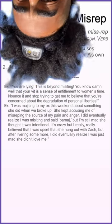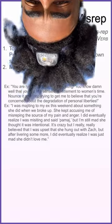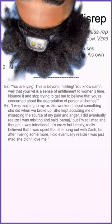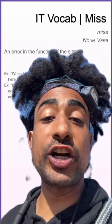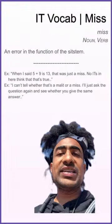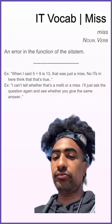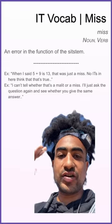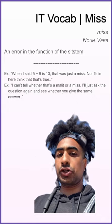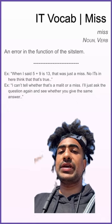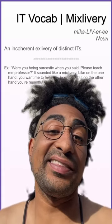I did eventually realize I was misiting and said pomage, but I'm still mad she thought it was intentional. I really believed I was upset that she hung out with Zach, but after livering more I realized I was just mad she didn't love me. Miss: an error in the function of the system. Example: when I said five plus nine is 13, that was just a miss. Mixed livery: an incoherent exclivery of distinct its.